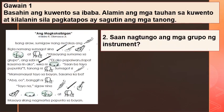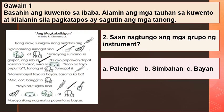Ikalawang bilang: Saan nagtungo ang mga grupo ng instrumento? A. Palengke, B. Simbahan, C. Bayan.